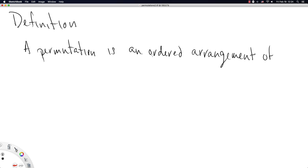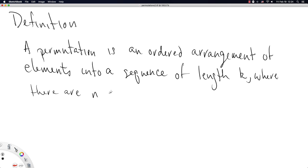We'll start with a definition. A permutation is an ordered arrangement of elements into a sequence of length k where there are n elements to choose from.